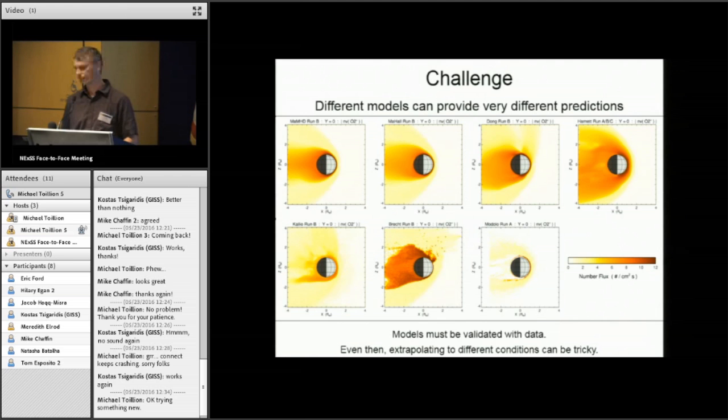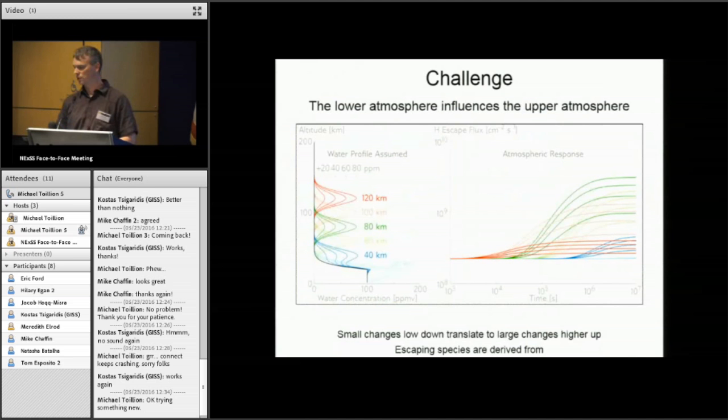And even then, extrapolating the models to different conditions can be tricky. A last challenge, as alluded to before by Bill Moore, is that the lower atmosphere influences the upper atmosphere. Every time you think you've hit your lower boundary condition when you're modeling escape, it turns out whatever's below that also turns out to be important. And so you keep having to couple down, down, down, down, down. So here's one thing we're learning about Mars when we're examining the great variation, order of magnitude variation in escape rates of hydrogen from the exosphere. What could cause that?